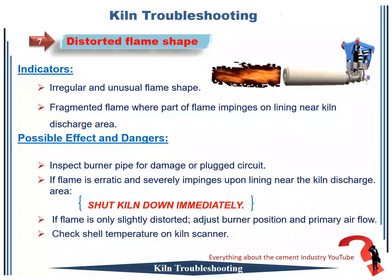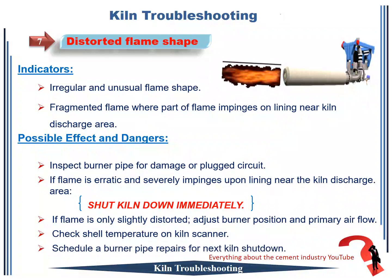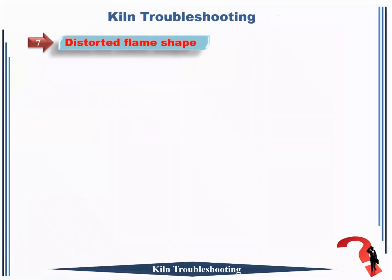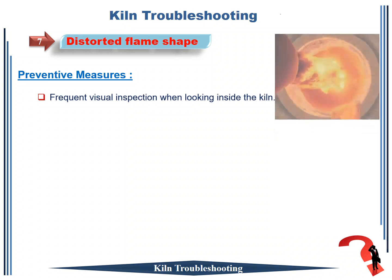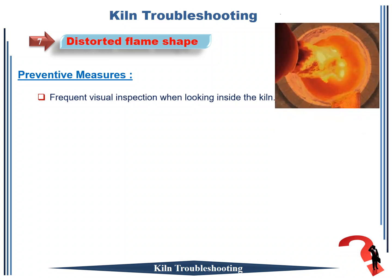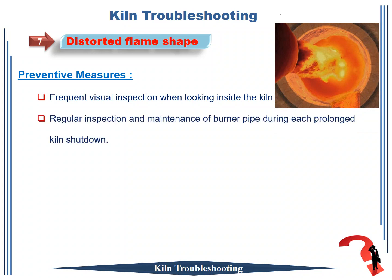Fourthly, check shell temperature on kiln scanner. Fifth, schedule burner pipe repairs for next kiln shutdown. The most important preventive measures taken in this case: 1. frequent visual inspection when looking inside the kiln; 2. regular inspection and maintenance of burner pipe during each prolonged kiln shutdown.